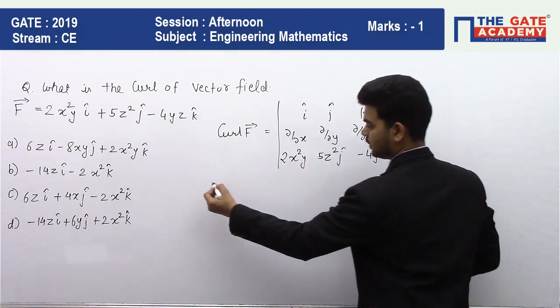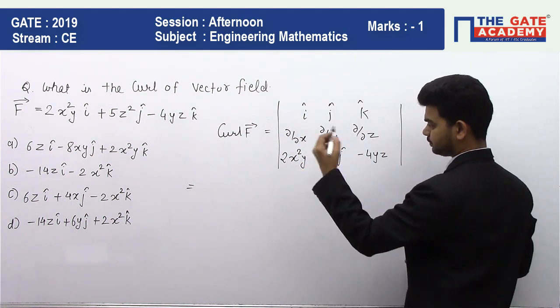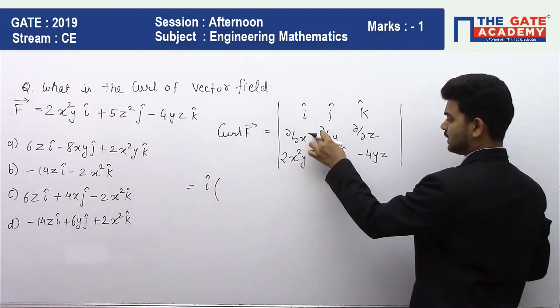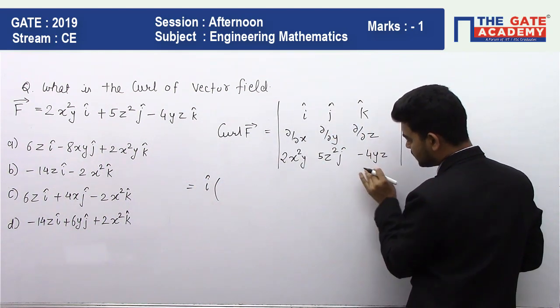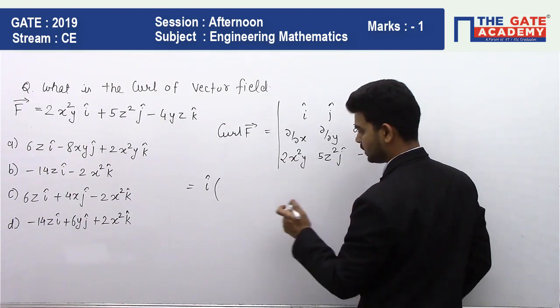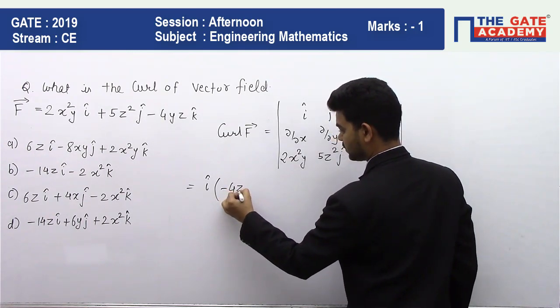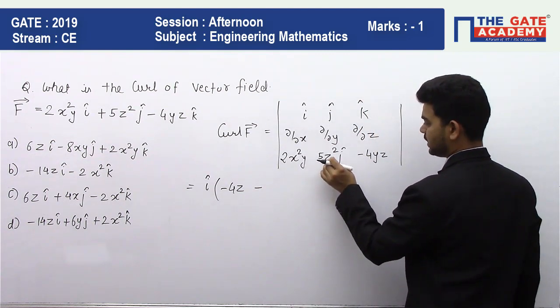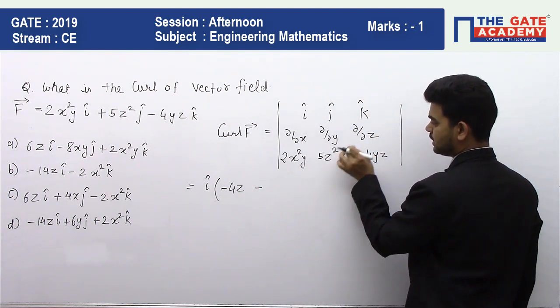So i into this means we will differentiate this whole function only with respect to y keeping z as a constant, so we will get -4z minus this and this means we will differentiate this function with respect to z, so we will get -10z minus j.